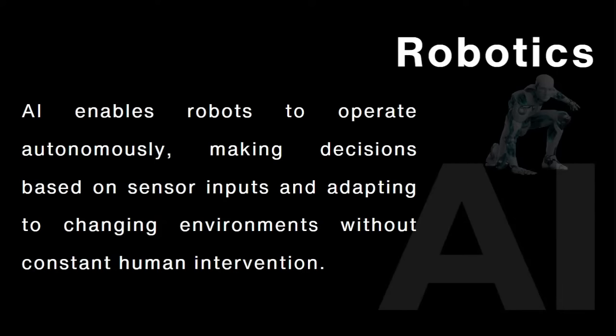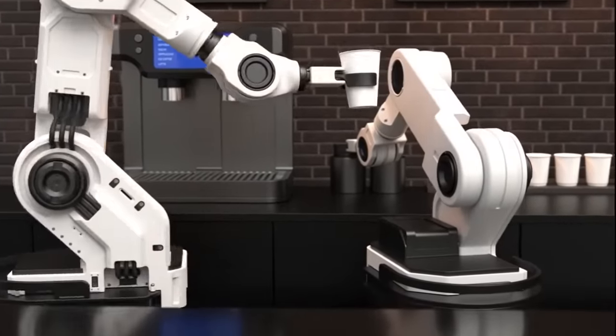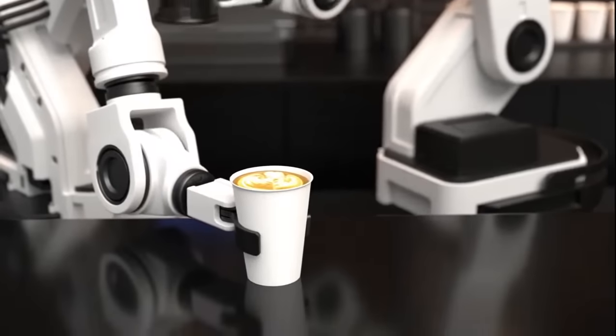In robotics, AI enables robots to operate autonomously, making decisions based on sensor input and adapting to changing environments without constant human intervention. When you integrate AI intelligence with hardware, it can be useful for creating robots like we've seen in movies. AI is also used in cybersecurity for automatic detection, DDoS attack detection, and so on. A lot of hardware with robotics has been developed, and a lot and lot of applications are there using AI.